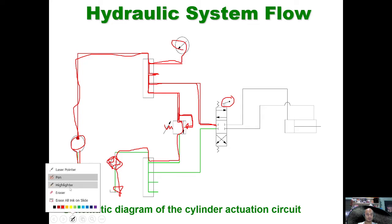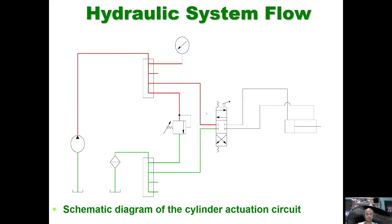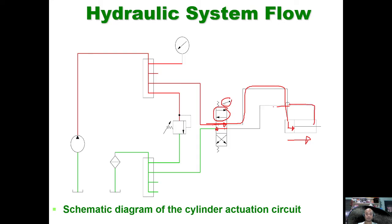If you activate the lever, the directional valve shifts to that position and hydraulic flow goes straight through, pushing the piston to the right. The return-side pressure flows back through the return line, through the filter, and back to the tank.